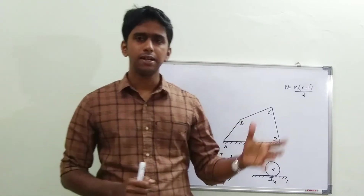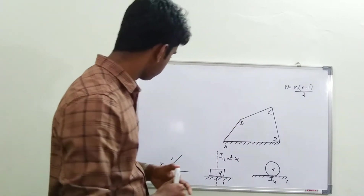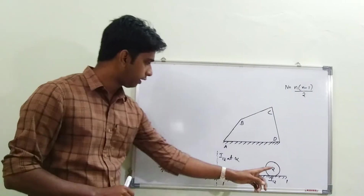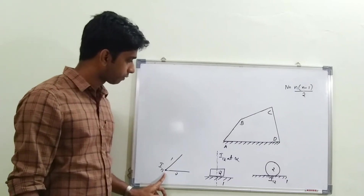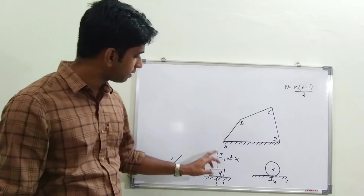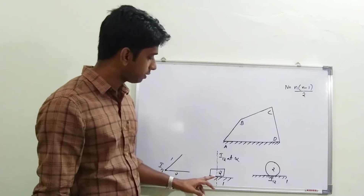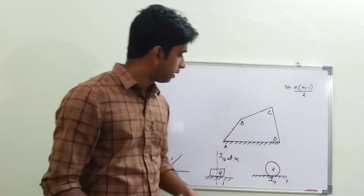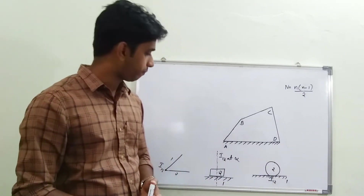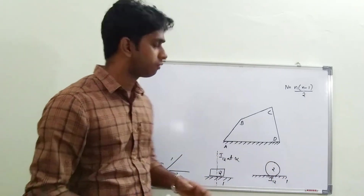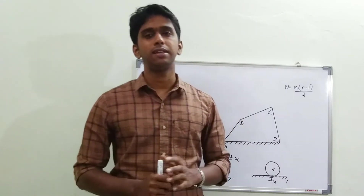That is in a four-bar mechanism. There are certain rules to locate instantaneous centers. In a pivoted joint, the pivot center itself will be the instantaneous center. In a sliding pair, the instantaneous center will lie at infinity in the direction perpendicular to the motion of the slider. And in a pure rolling contact, the contact point itself will be the instantaneous center.